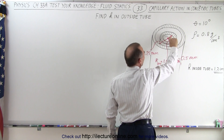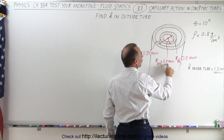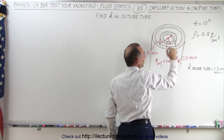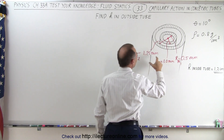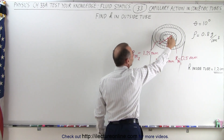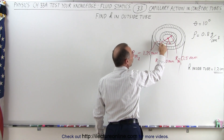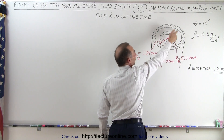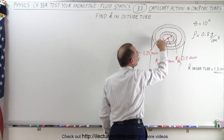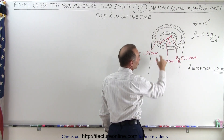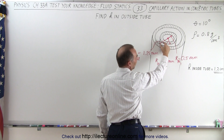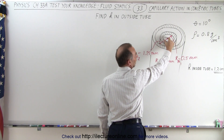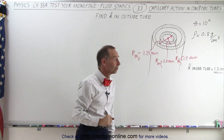The outside radius of the inner tube is 1.0 millimeters, which is also the inside radius of the second tube. The inner wall of the outside tube has a radius of 1.25 millimeters, so there is 0.25 millimeters between the two tubes, and the inner radius is 0.5 millimeters.